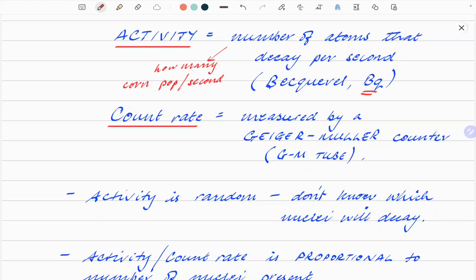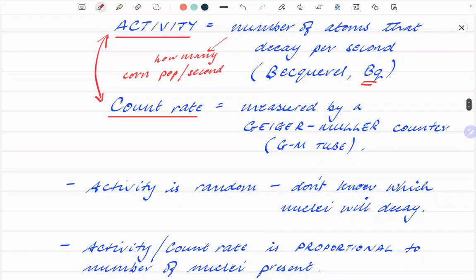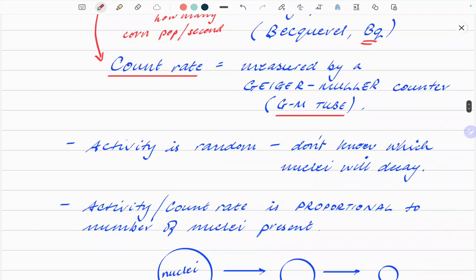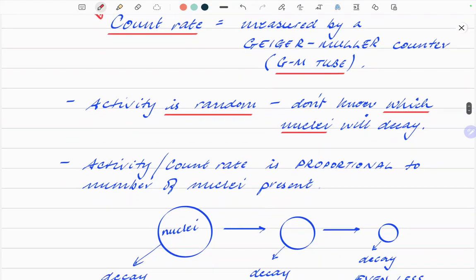Obviously, the greater the activity, the more radioactive something is, and the higher the count rate. So activity and count rate sometimes are interchangeable. You may see this thing, G-M tube. That's a Geiger-Müller tube. It's just an automatic piece of equipment that has this crackling sound when it comes across radioactive material. Activity in radioactive material is random. Very fundamental principle. You don't know which nuclei are going to decay at any given time.